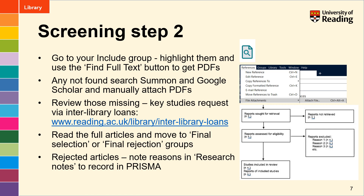You can now start reading the full articles and judging them against your inclusion criteria again. The ones that are still relevant move into your final selection group. The ones that aren't relevant go in your final rejection group, but you should note the reasons why you rejected them at this stage — use the Research Notes field in the EndNote record to record those reasons, because you will need to report them in your PRISMA diagram.